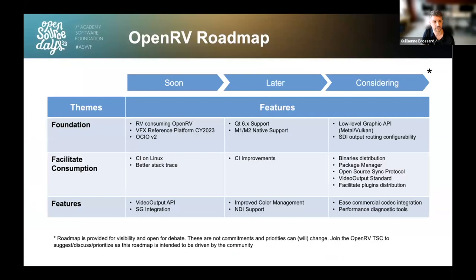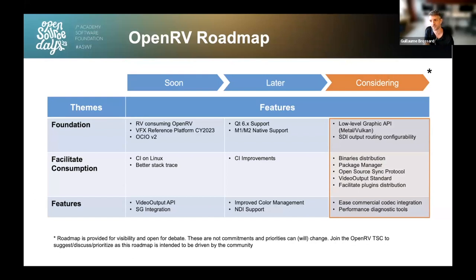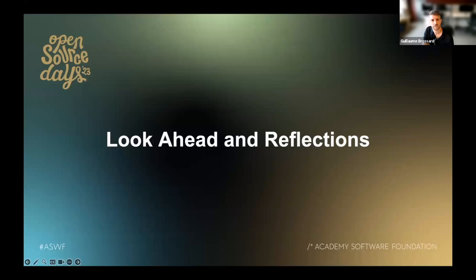Here is a more encompassing view of the current OpenRV roadmap with a detailed look at short and long-term priorities. The 'considering' section lists items we are considering implementing next in OpenRV — the prioritization and order is open for discussion and meant to be driven by the community. If you would like to influence what comes next in OpenRV, we encourage you to join the OpenRV TSC.